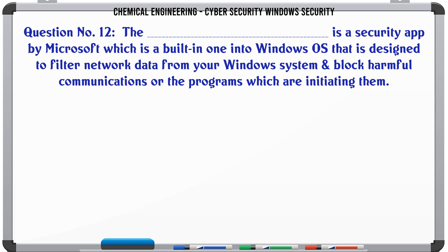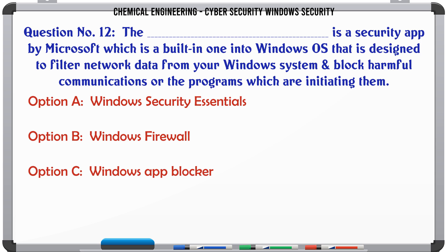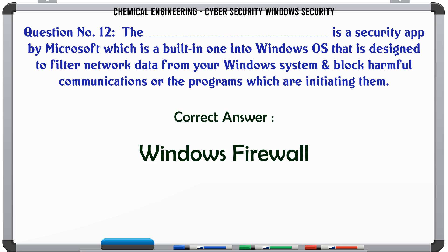Is a security app by Microsoft which is built-in to Windows OS, designed to filter network data from your Windows system and block harmful communications or the programs which are initiating them. A. Windows Security Essentials, B. Windows Firewall, C. Windows App Blocker, D. Windows 10. The correct answer is Windows Firewall.